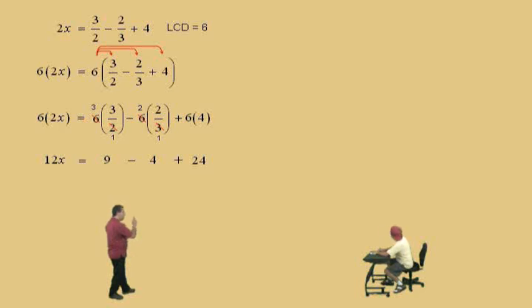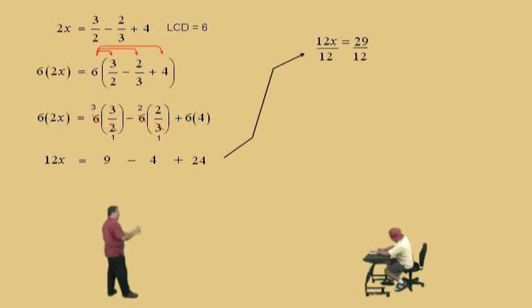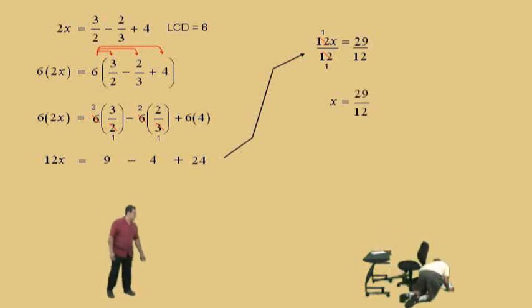Let's take our work up over there. We have a 12x. What's 9 subtract 4? 5. And 5 plus 24? 29. We have to get the 1x by itself, so we have to divide both sides by 12. The 12s cancel, give us our 1 over 1, which is the 1x. What's our answer? 29 over 12.